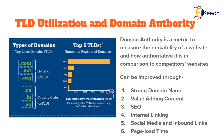Value-adding content is another way of improving domain authority — the content must support the domain name; you cannot have a misleading domain name and completely different content. SEO, or search engine optimization, naturally increases searchability and overall ranking in search engines. Internal linking, inbound linking, and presence on social media — with links from social media platforms to the website — are also great ways of improving domain authority.